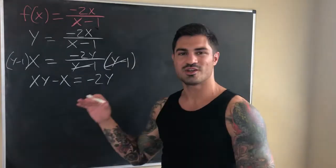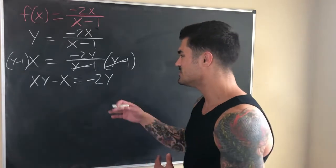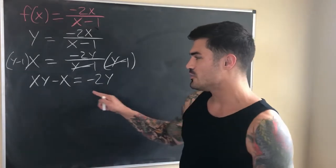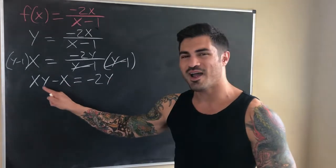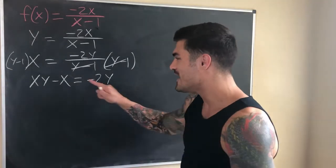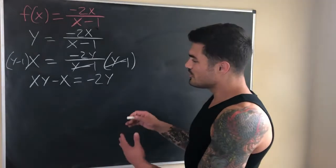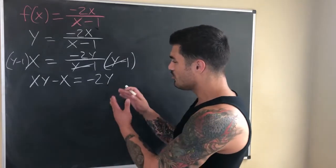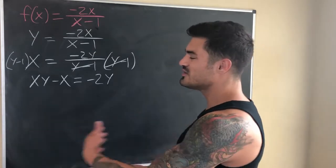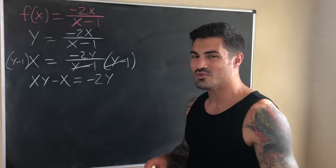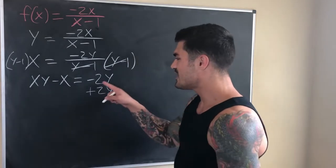This is where the confusion starts. Most students got to this point, but the problem is we want to solve for y and we have y appearing in two different terms. We want y equals something with no y's on the right side. When this happens, the strategy is to get everything with a y on one side of the equation, and everything without a y on the other side. So let's do that.